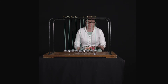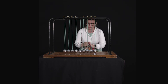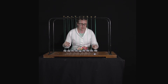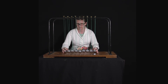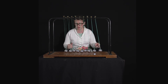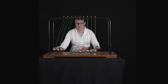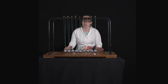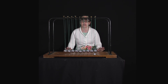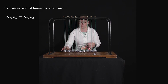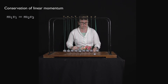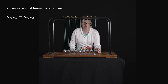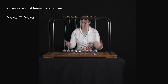Now that we've looked at elastic and inelastic collisions, we can explain Newton's cradle. If you release one ball from one end, one ball comes out the other end. If you release two balls, two balls come out. If you release three, three come out. This is an elastic collision, so both momentum and kinetic energy are conserved: M1V1 = M2V2 (momentum), and M1V1² = M2V2² (kinetic energy, with halves cancelled).